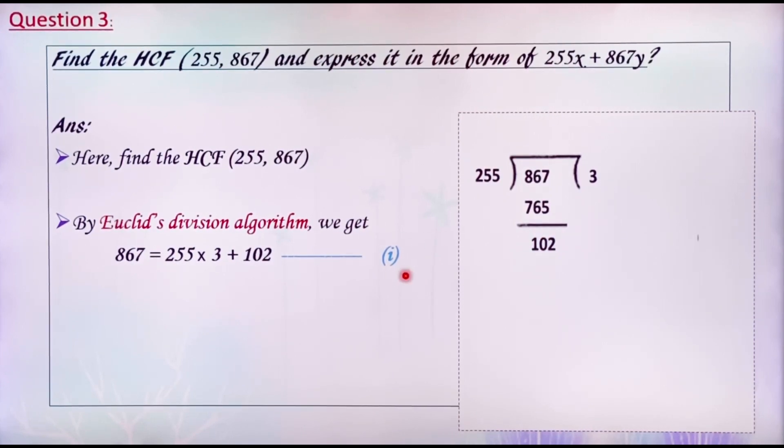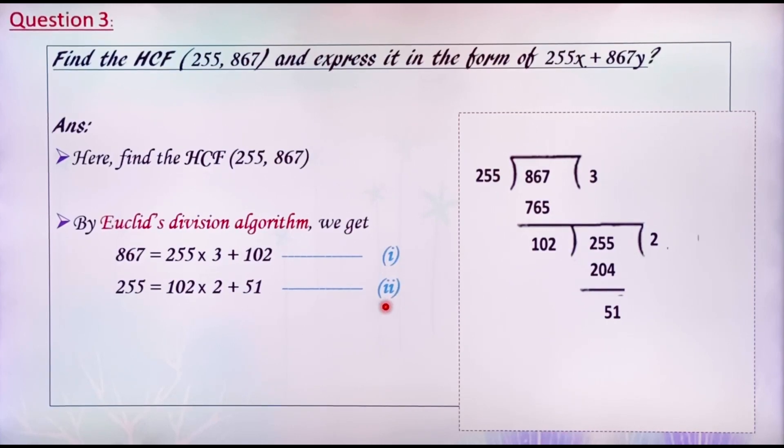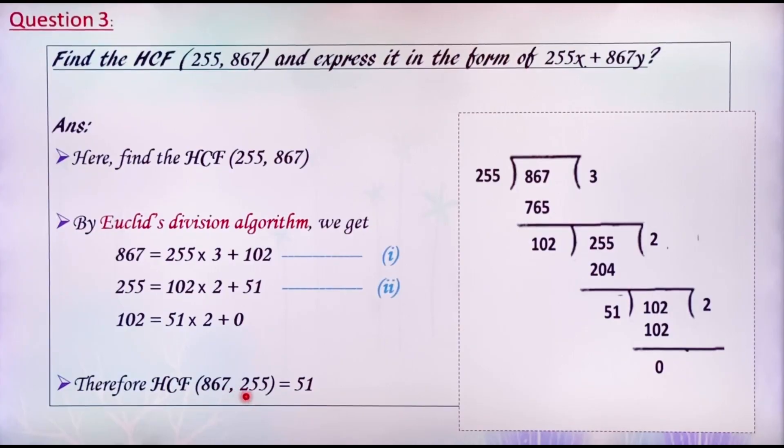Now, 255 equals 102 into 2 plus 51, equation 2. And, 102 equals 51 into 2 plus 0. Here, the remainder is 0. Therefore, HCF is 51.